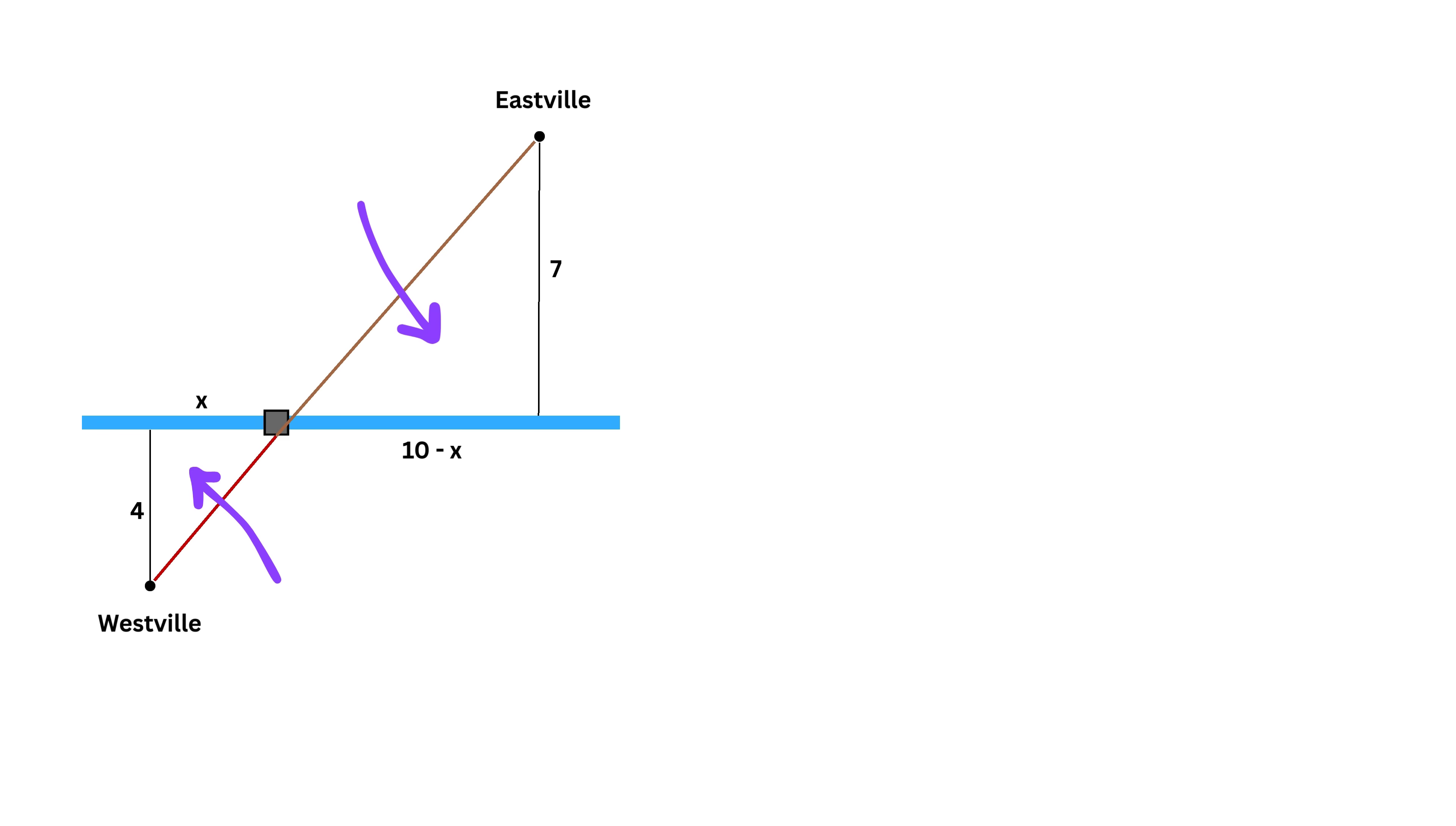We get two right-angled triangles. Both of these triangles share the same angle at the river, and both have one right angle. That means they are similar triangles because they have two equal angles. Since the triangles are similar, their sides are in proportion. This means four, or this length, over this side length, or x, equals seven, or this length, over this side length, or ten minus x.